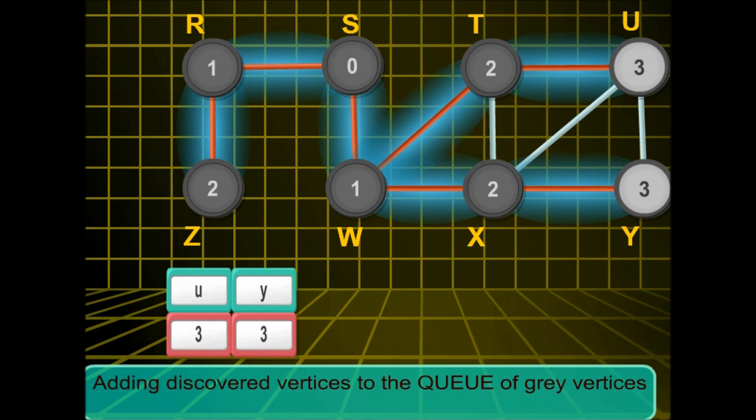Now next to be dequeued will be u. But there is no white node adjacent to u, so it will be simply dequeued and marked black.